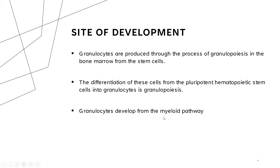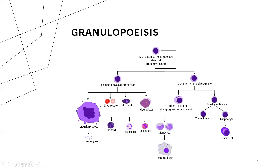We have the myeloid and the lymphoid pathway. Granulopoiesis follows the myeloid pathway so that we end up producing granulocytes. This is a pluripotent hematopoietic stem cell, which can differentiate and follow either a myeloid or a lymphoid pathway. In the myeloid pathway, other things are produced like megakaryocytes and erythrocytes. But through the myeloblast, we can have eosinophils, neutrophils, basophils, and mast cells produced from the myeloid pathway.